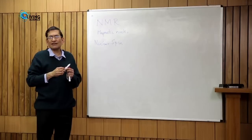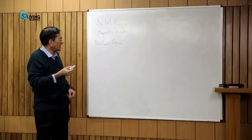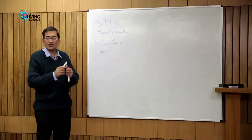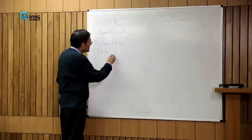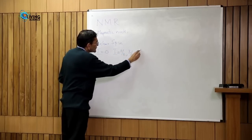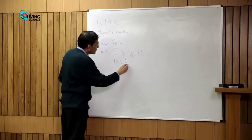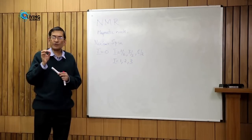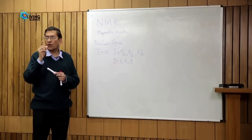The spin itself is described by a quantum number. The quantum number I can be 0, which means it does not have a spin and is a non-magnetic nucleus, or it can be one-half, three-halves, five-halves, and so forth, or it can be 1, 2, 3. Spin is an intrinsic property of an atomic nucleus — either half-integral or integral.